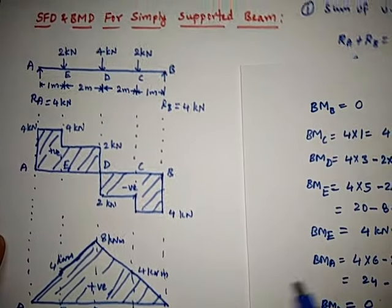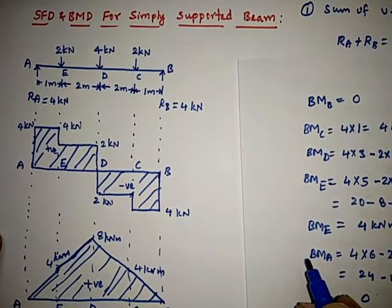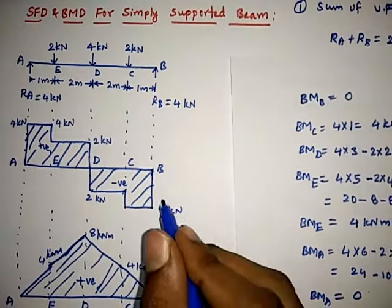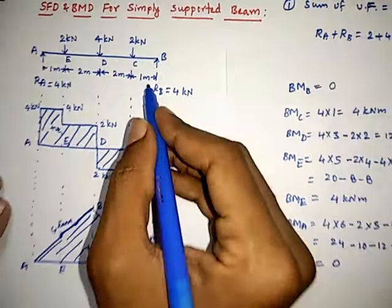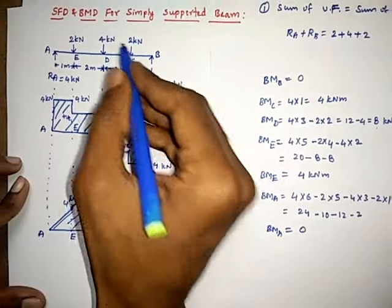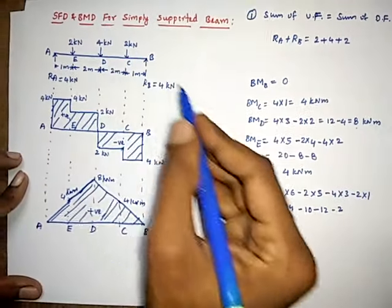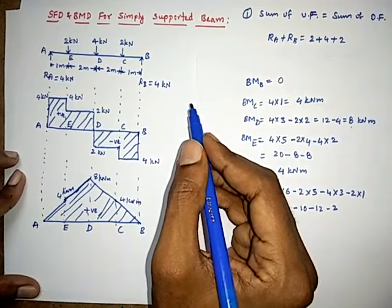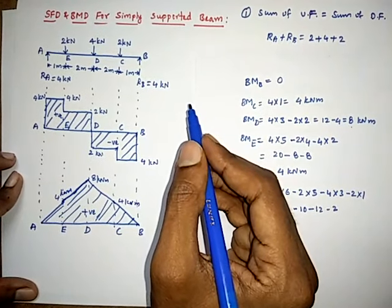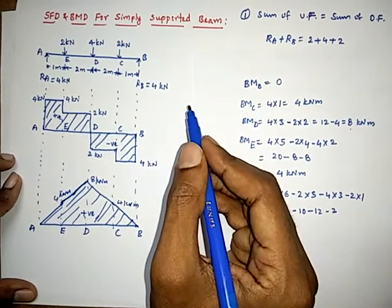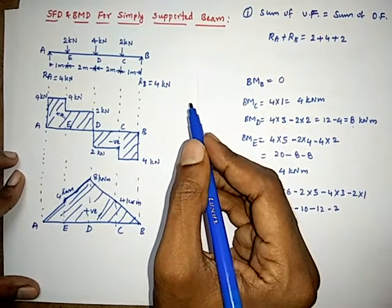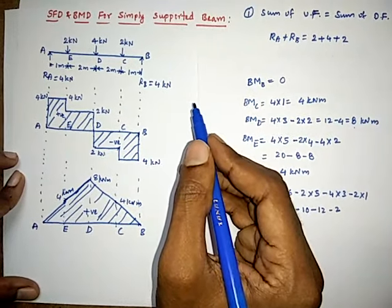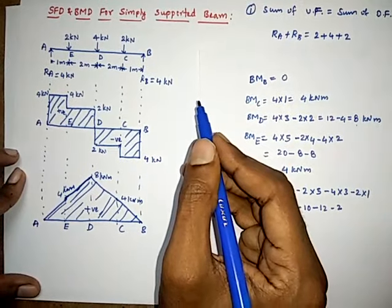This is the complete method to draw shear force and bending moment diagrams for a simply supported beam with point loads. For more videos, please subscribe and activate the bell symbol, like, and share with your friends.